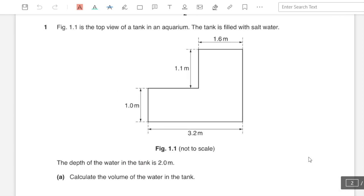Figure 1.1 is the top view of a tank in an aquarium. The tank is filled with salt water, the depth of the water in the tank is 2 meters. Calculate the volume of water in the tank.